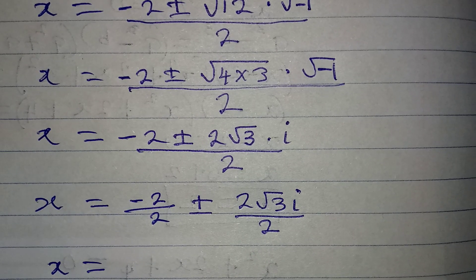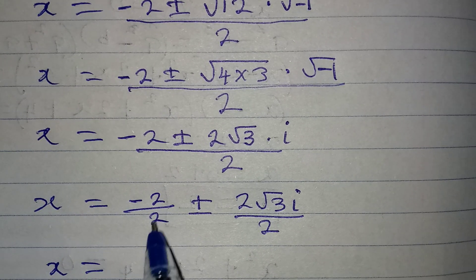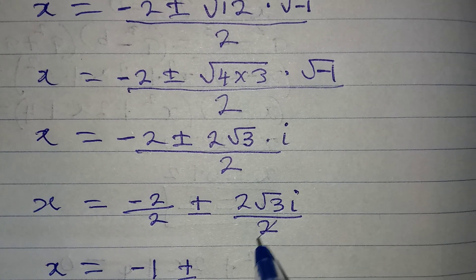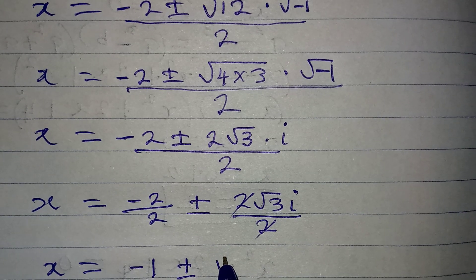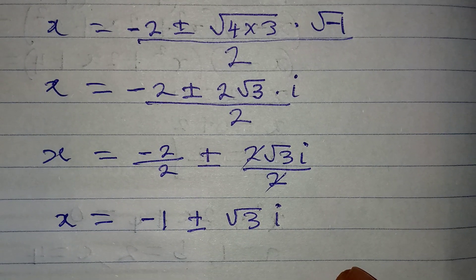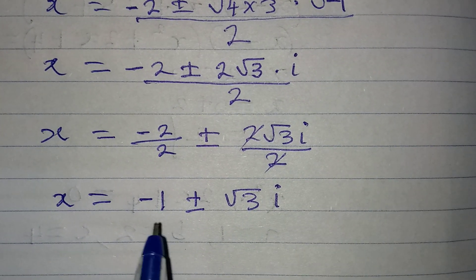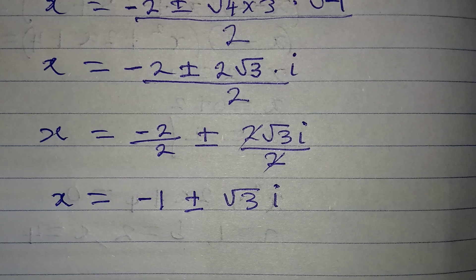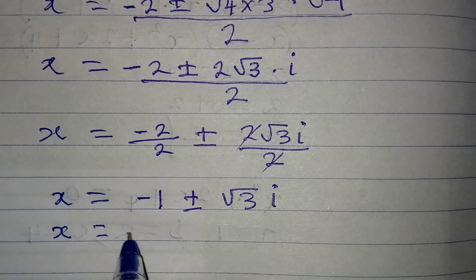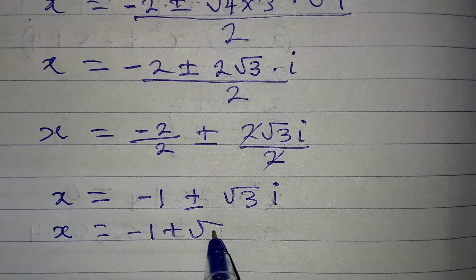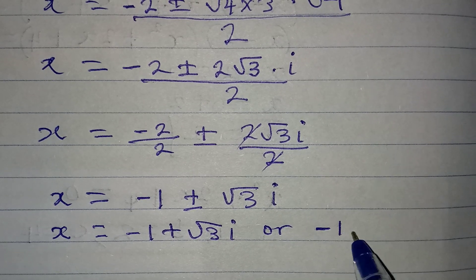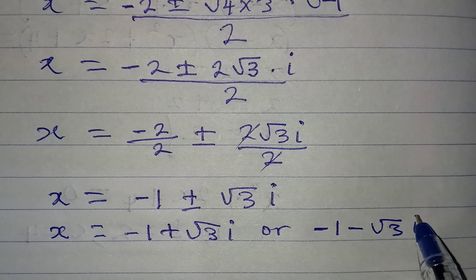Note that this i is not under the square root sign. So x will equal: dividing through, we get minus 1, plus or minus root 3i. This gives us two solutions in one, because this is the same thing as x equals minus 1 plus square root of 3i, or minus 1 minus square root of 3i.